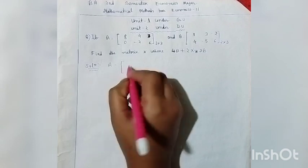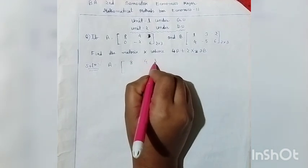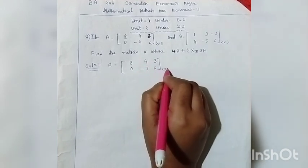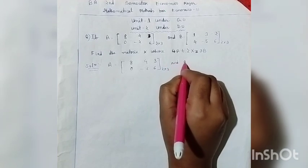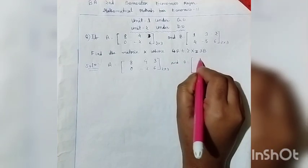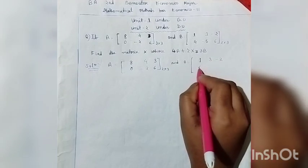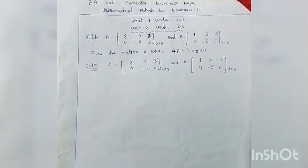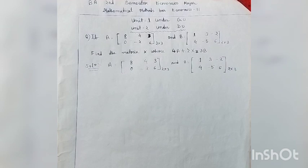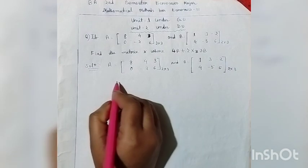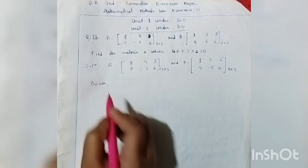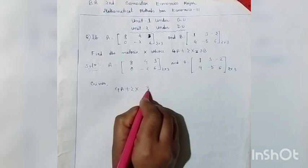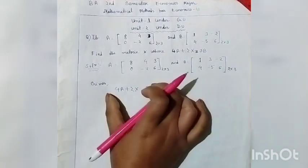So matrix A is given as: 8, 4, and 3 in the first row; 0, minus 2, and 6 in the second row — this is a 2 by 3 dimensional matrix. And matrix B is given as: 1, 3, minus 2 in the first row; 4, minus 5, and 6 in the second row. This is also a 2 by 3 dimensional matrix. The given equation is 4A plus twice X equals twice B.